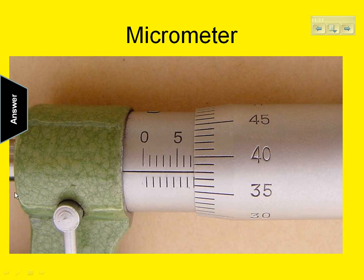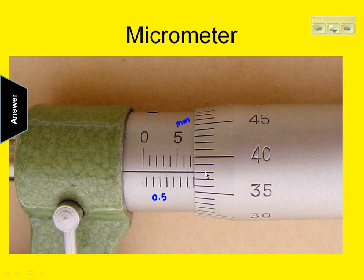Let me give you an example of reading this. You have some sort of item between the thimble and anvil. Notice the sleeve is past the five millimeter mark — that's a six millimeter mark and a seven millimeter mark. These lower ones are 0.5s. Notice that your sleeve hasn't quite reached a 0.5 part, so the measurement on this is 7.38 millimeters. You will not be adding any digits to this reading, as the graduations are so fine you won't be making any guesses.